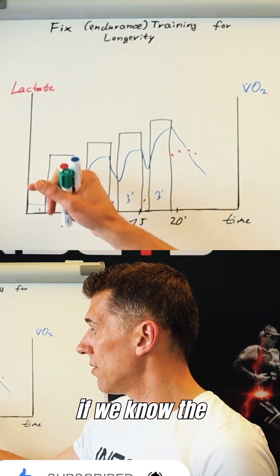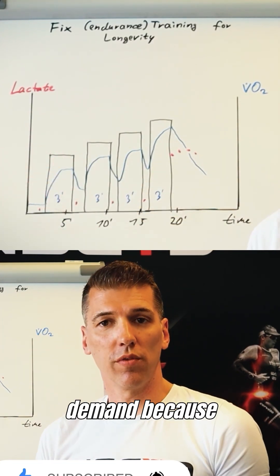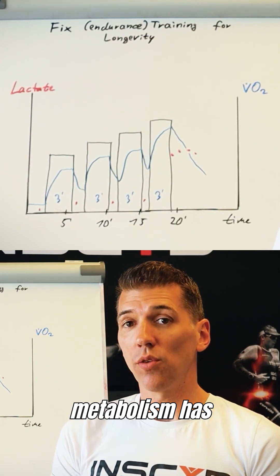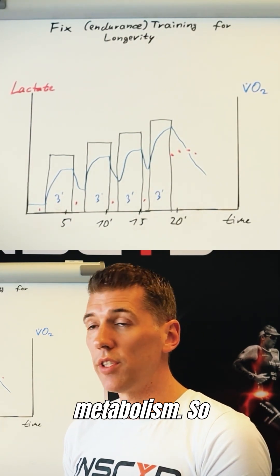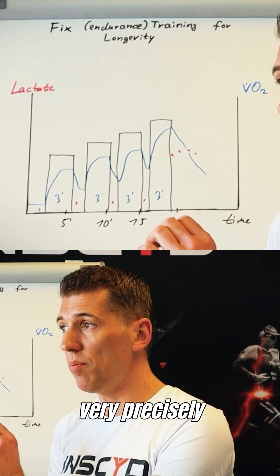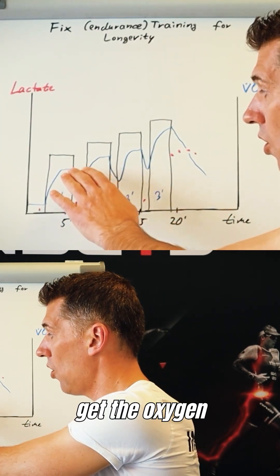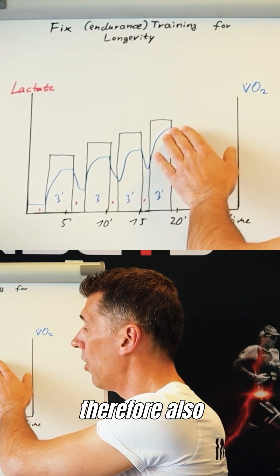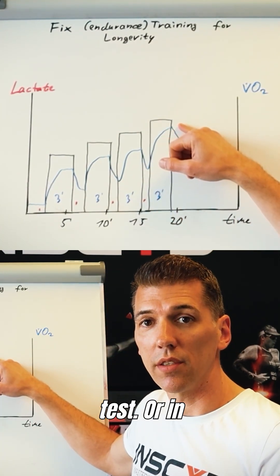And then the same thing applies if we know the total energy demand because we know the workload. Then all the remaining energy that's not coming from anaerobic metabolism has to come from aerobic metabolism. So therefore, it is possible to very precisely get the oxygen uptake for each of those steps and therefore also get the maximum oxygen uptake at the end of the test.